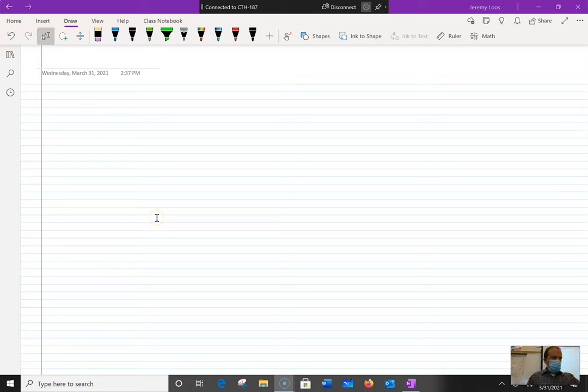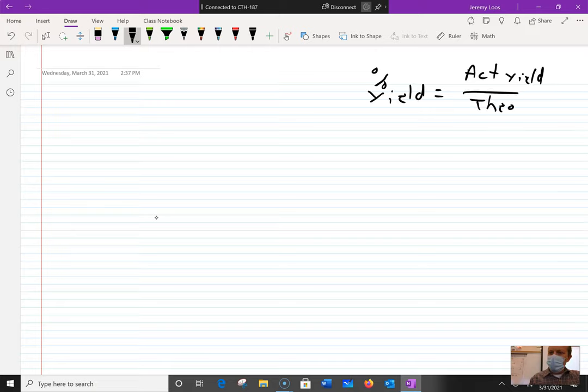So here we are. This is page 180, as I said. These percent yield problems involve this formula, which is one of the things that ideally we've already done from the asynchronous remote on Monday. But just in case, it's this. It's actual yield over theoretical yield. Now we do multiply that by 100, turn it into a percent.